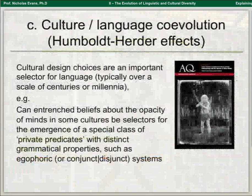The third type of co-evolution is culture-language co-evolution — I call these Humboldt-Herder effects, to distinguish them from Sapir-Whorf effects. This is where cultural design choices and cultural preoccupations actually become selectors for language structures. We were hearing about other minds: different cultures have very different beliefs about the opacity of other minds — how far you can actually know what other people are thinking. Quite a lot of anthropologists have claimed that some cultures are much more epistemologically sceptical about others than, say, mainstream psychoanalytic culture.